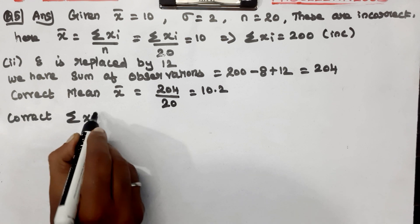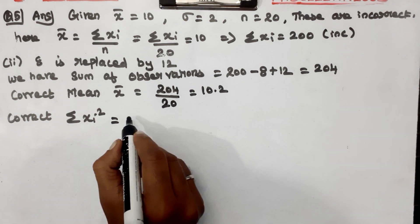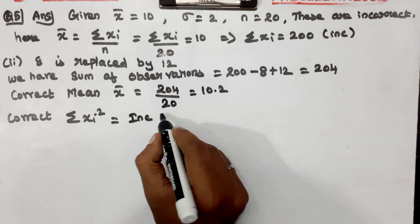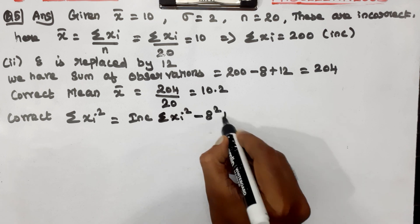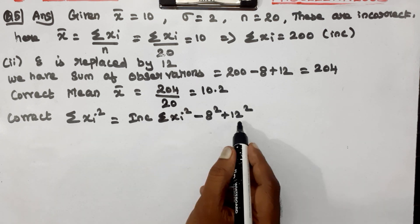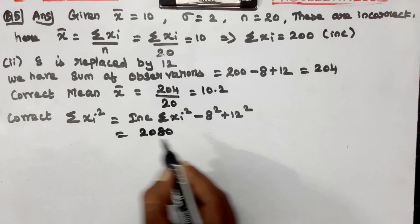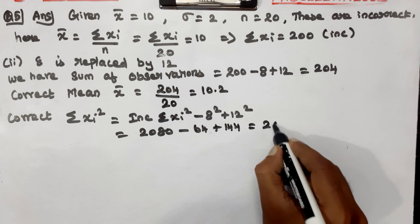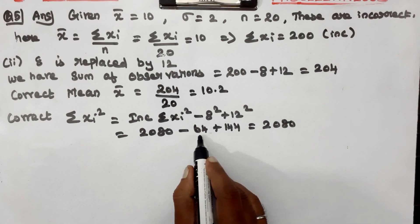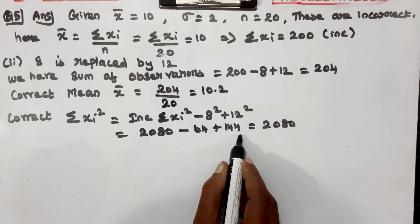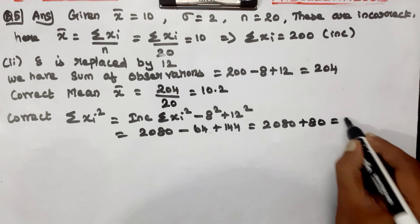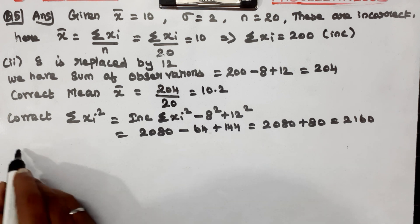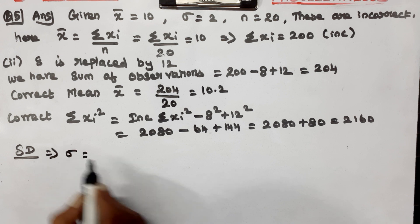Now correct summation xi²: correct summation xi² = incorrect summation xi² minus 8² plus 12² = 2080 minus 64 plus 144 = 2160.